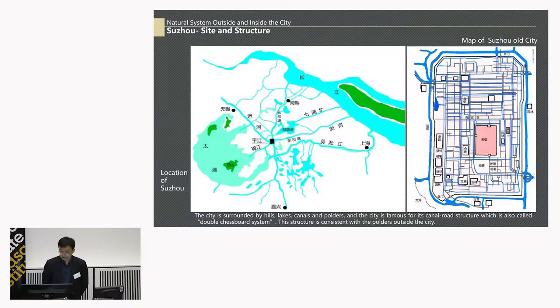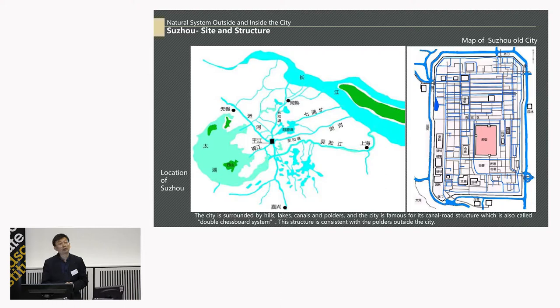One of the most prosperous cities in this area is Suzhou. In the Chinese mind, Suzhou is one of the paradises for Chinese people. Suzhou is surrounded by hills, lakes, canals, and polders, and the city is famous for its canal-road system, also called the double chessboard structure. This structure is consistent with the polders outside the city. If you remove all the buildings, the structure inside the city is actually the same as the structure outside. So Suzhou is essentially a polder city.